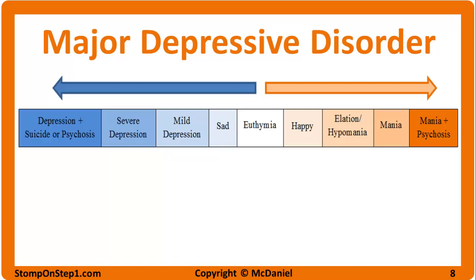Suicide is most often associated with major depressive disorder, but it can also result from borderline personality disorder, psychosis, substance abuse, or other psychiatric illnesses with a depressive component like bipolar disorder or adjustment disorder. Suicidal ideation is when a patient frequently has thoughts of wanting to kill themselves but has not actually attempted suicide yet. You need to ask every patient with psychiatric symptoms about suicidal ideation at every visit. If the patient has the intent to commit suicide and a plan for doing so, they need to be hospitalized — and in some cases may need to be held against their will. If a patient has thoughts of suicide but has no plan, they can be treated as an outpatient.